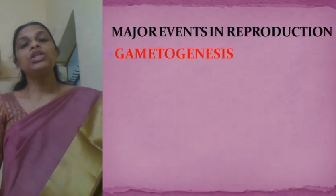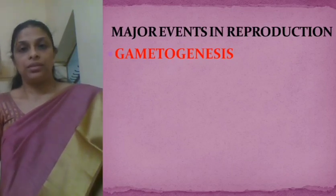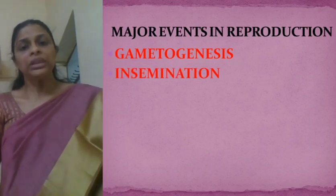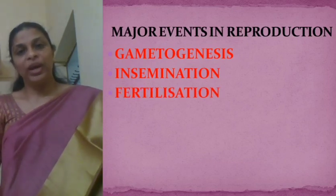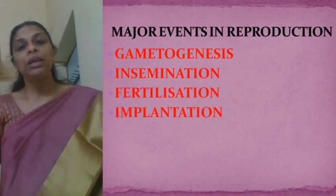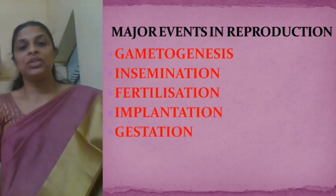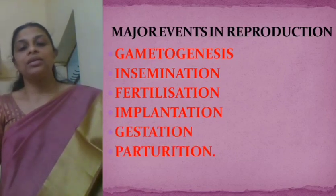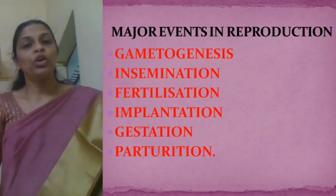The first major event in reproduction is gametogenesis. Second, insemination. Third, fertilization. Fourth, implantation. Fifth, gestation. And the last one, parturition. So those are the six major events in human reproduction.